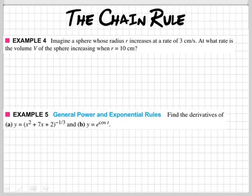Okay, so maybe this is how you would read this. You would go, okay, imagine a sphere whose radius r increases at a rate of 3 centimeters per second. Okay, I'll put that back in my mind. I don't think it's important yet. At what rate is the volume V of the sphere increasing when r equals 10 centimeters?